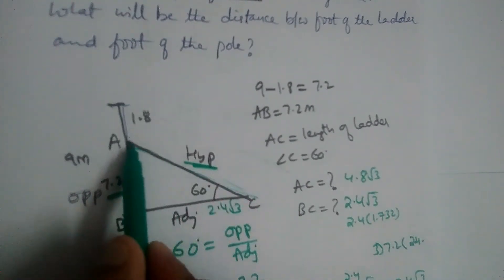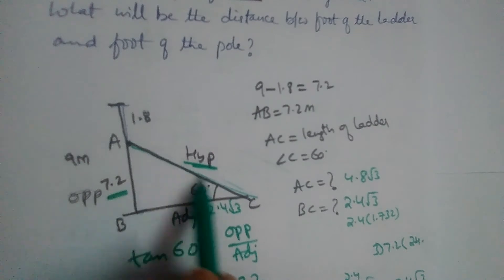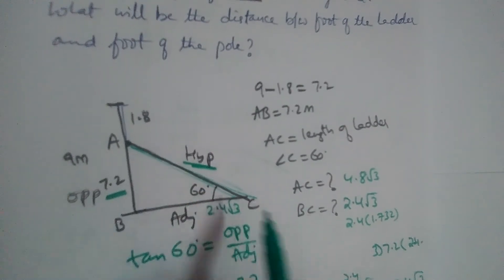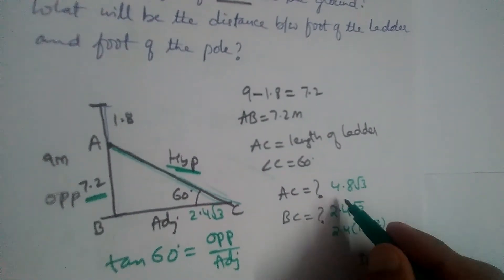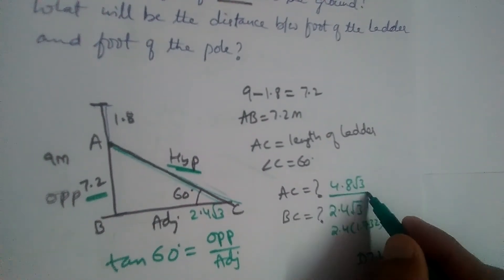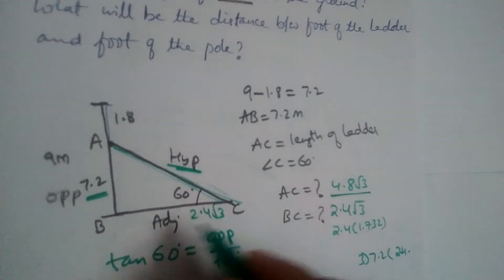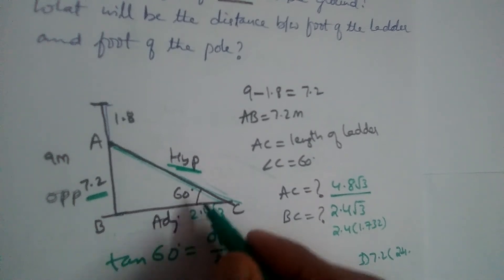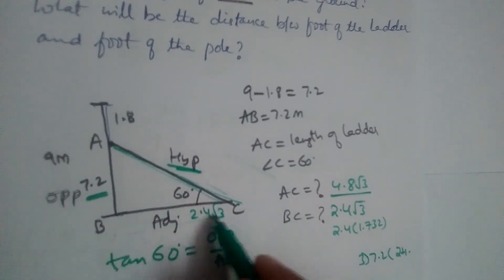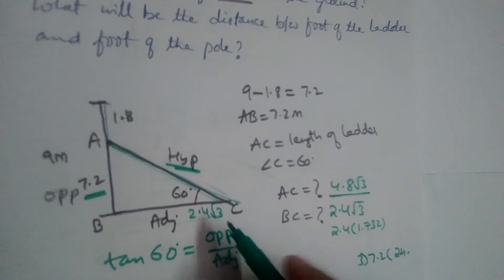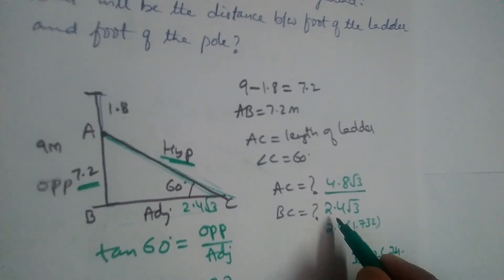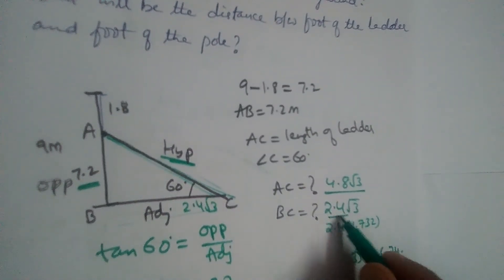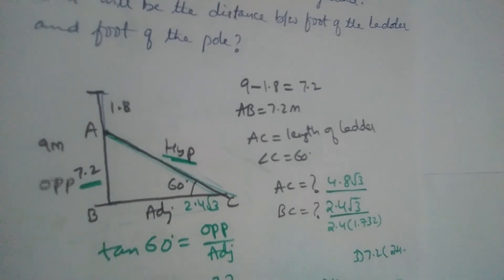So AC — the length of the ladder — is 4.8√3 meters, and BC — the distance between the foot of the ladder and the pole — is 2.4√3 meters.